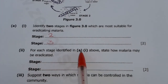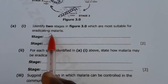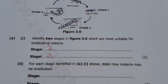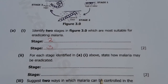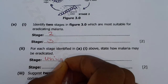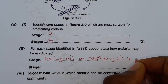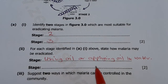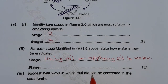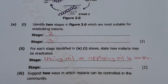For each stage identified, state how malaria may be eradicated. Using stages 2 and 3, how can you eradicate malaria? Number one: applying oil in the water. This oil is going to prevent the diffusion of oxygen in the water, causing the larva to suffocate and die due to shortage of oxygen.